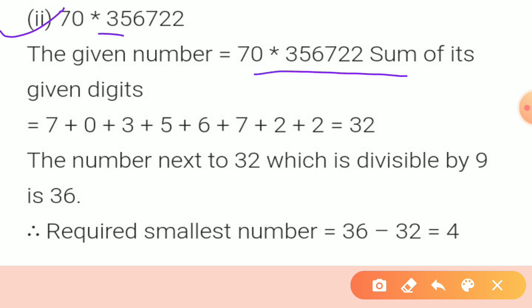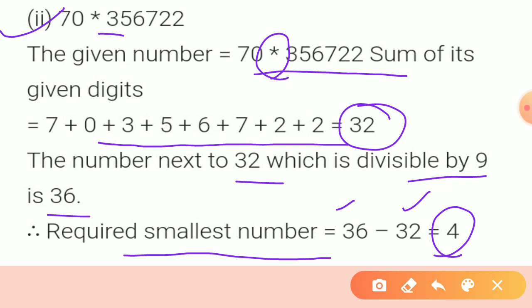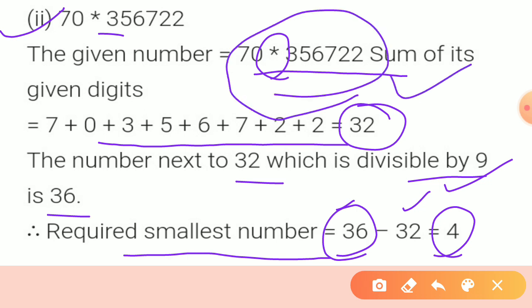Part 2: after adding all the digits we get 32. The next number after 32 which is divisible by 9 is 36. So the required smallest digit will be 36 minus 32 = 4. If we place 4 at the star's position, the sum becomes 36 which is fully divisible by 9, and then the whole number will be divisible by 9.